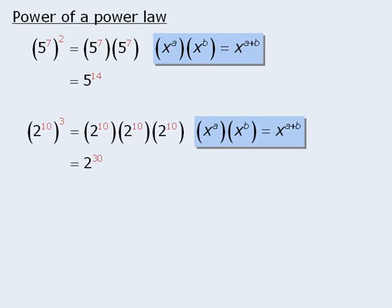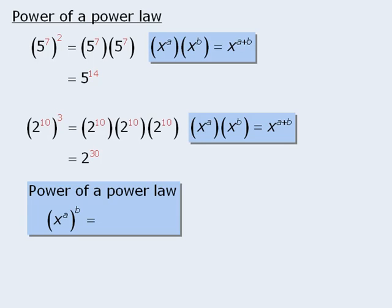To generalize these results, we can say that x to the power of a all to the power of b will be equal to x to the power of a times b. In other words, if a power is raised to another power, we can keep the base the same and multiply the two exponents.